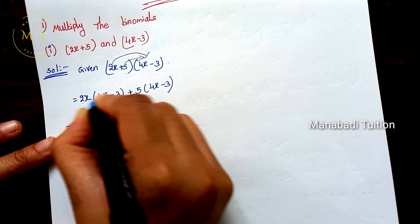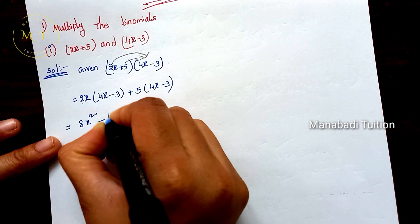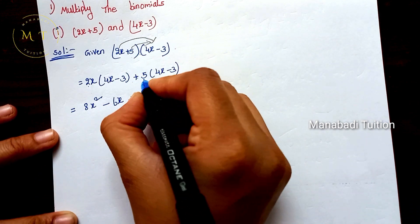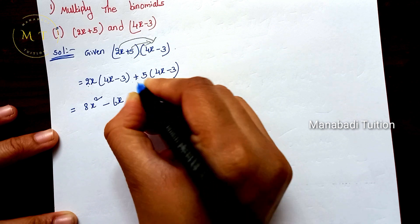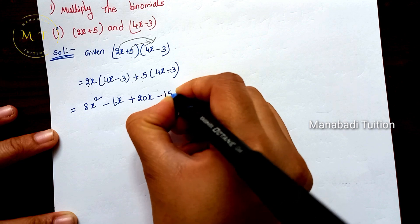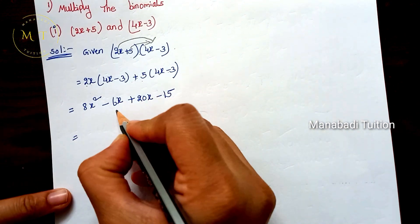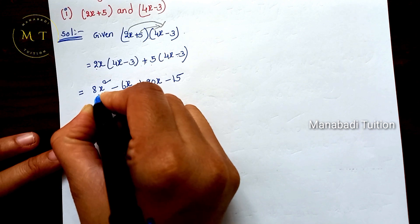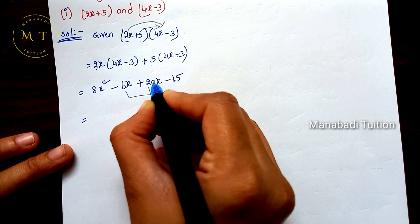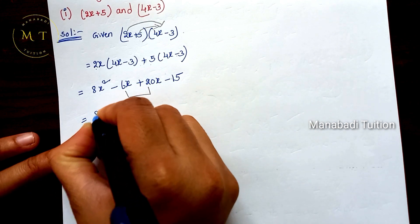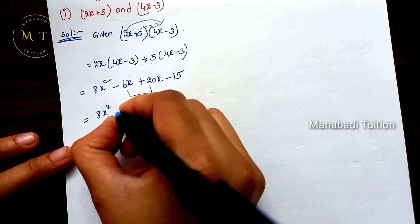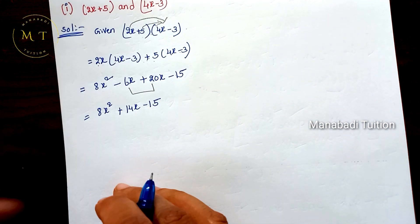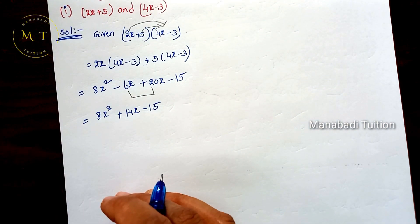2 times 4 is 8, x into x is x squared. Minus 2 times 3 is 6, so we get 6x. Then 20x in subtraction with 6x gives 14x. And the largest number is plus, so plus. Minus 15. So the answer is 8x squared plus 14x minus 15.